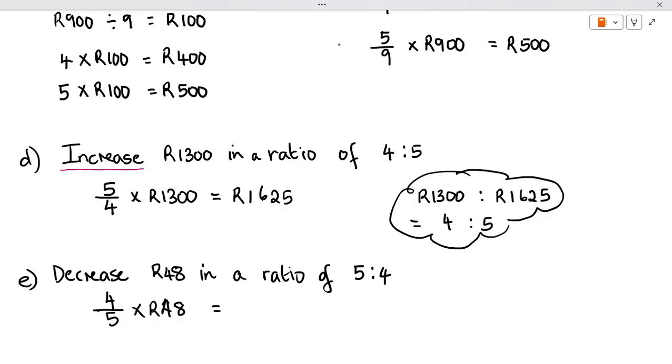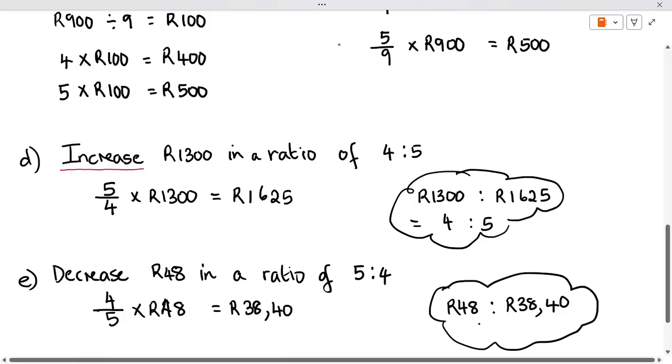And I end up with 38 Rand and 40 cents, comma 4, so 40 cents. Here, the same thing. If I took my ratio and I went 48 to 38 Rand and 40 cents, I would end up with a ratio of 5 to 4, back to the original answer.